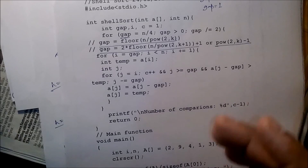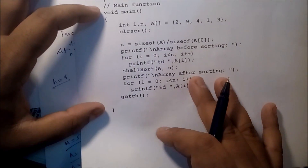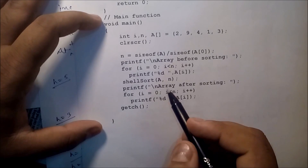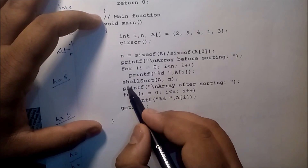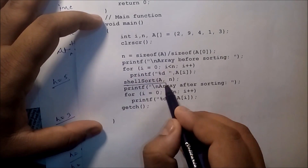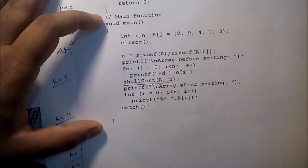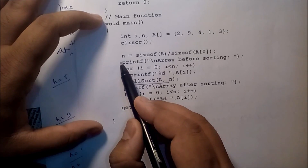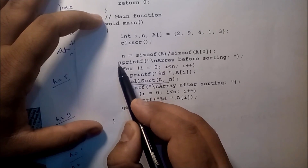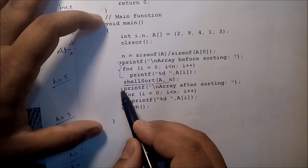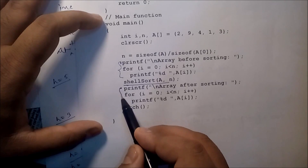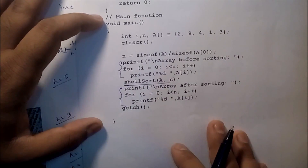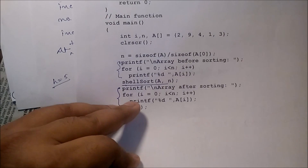This is the main function. Inside the main function, we are calling the Shell Sort function. We print the array content before sorting, then call Shell Sort, and then print the array content after sorting. This is our Shell Sort implementation.